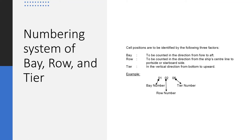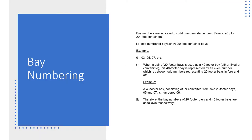Bay numbers are indicated by odd numbers starting from forward to aft for 20-foot containers, and even numbers for 40-foot containers. So bay numbers 1, 3, 5, 7, 9, 11, 13 are all for 20-foot containers. If a 40-foot container comes in, we don't say bay 1 or bay 3 — we say bay 2, which sits between bay 1 and bay 3. Bay 1 and bay 3 are assigned to 20-foot containers, and bay 2 is assigned to a 40-foot container.